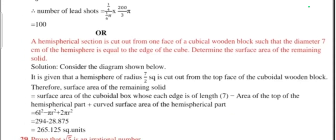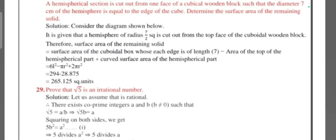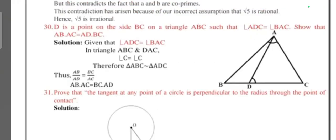Question 28: A hemispherical section is cut out from one face of a cubic wooden block such that the diameter of the hemisphere is equal to the edge of the cube. Determine the surface area of the remaining solid. Question 29: Prove that √5 is an irrational number. Instead of √5 they will give √2, √3, or √5. So same for all questions. This is from the first chapter, as you know.